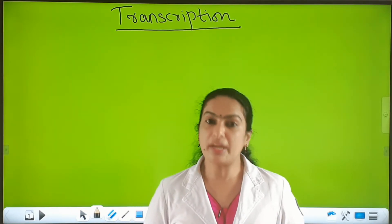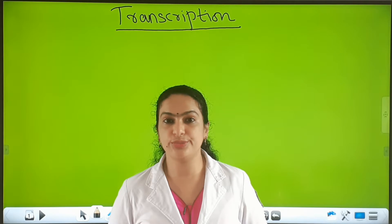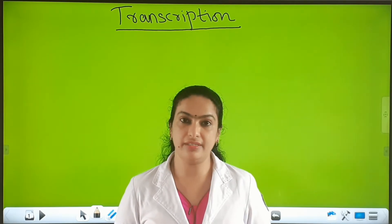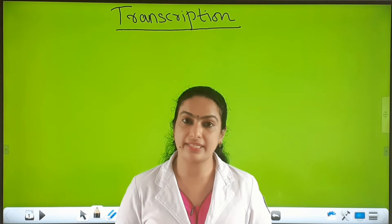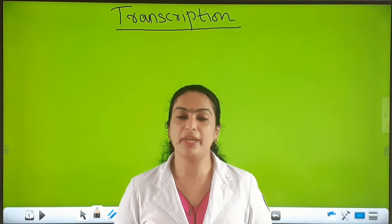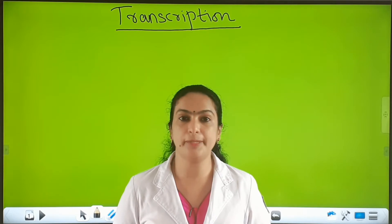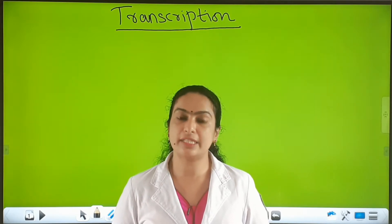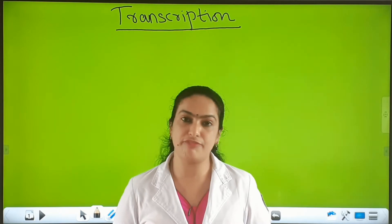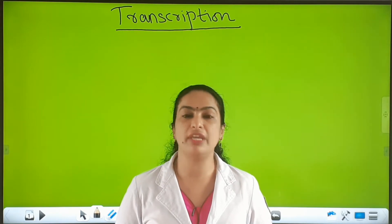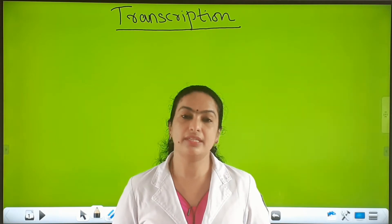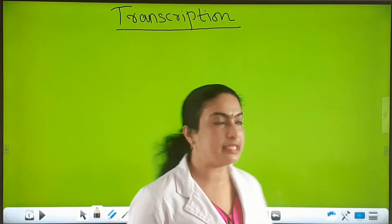In replication, as I told you, both the strands of the double-stranded DNA are involved as template strand for the formation of a new strand. But here, in the transcription process, for the copying of genetic information or for the formation of mRNA, only one strand is involved.